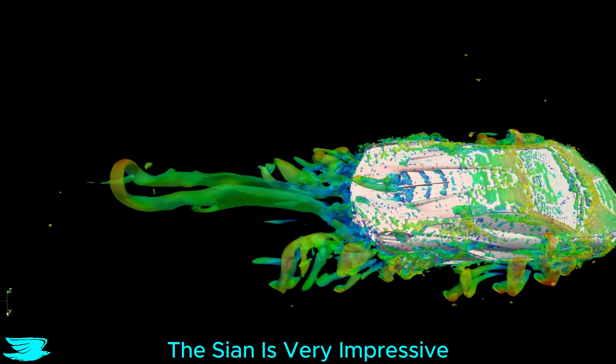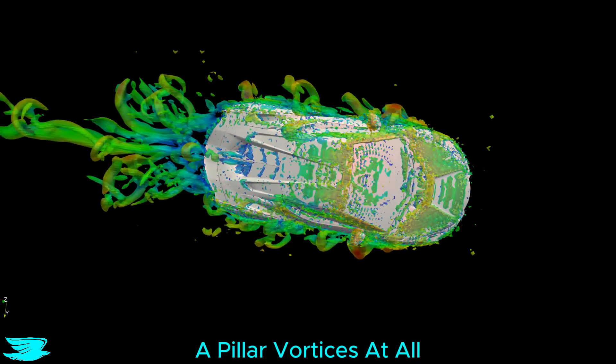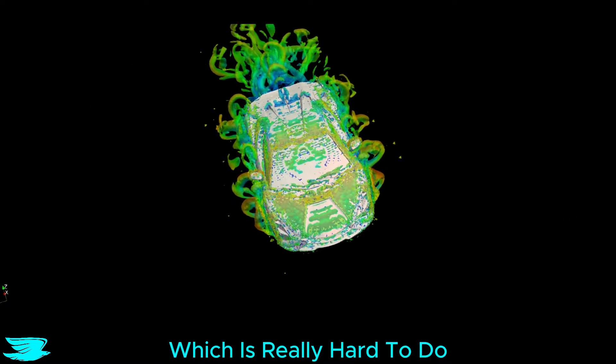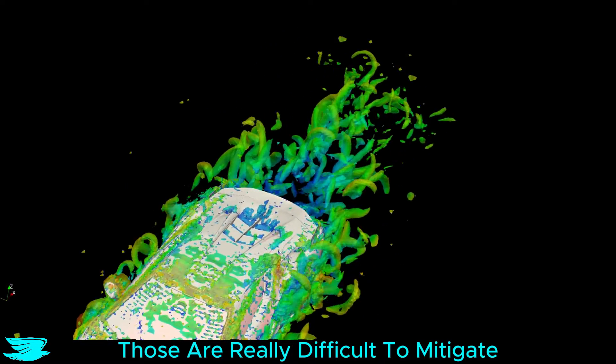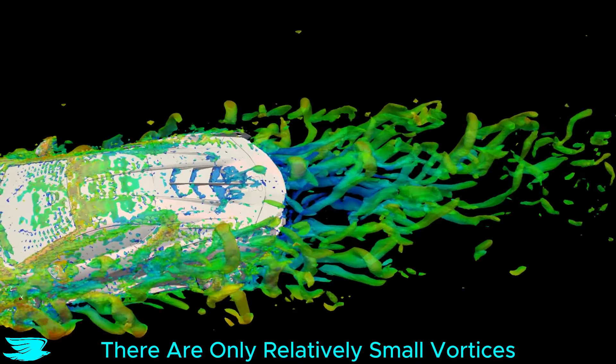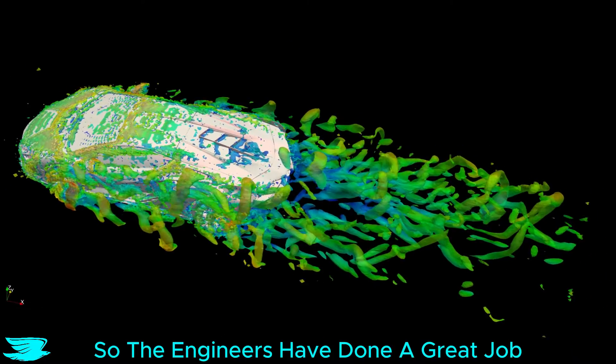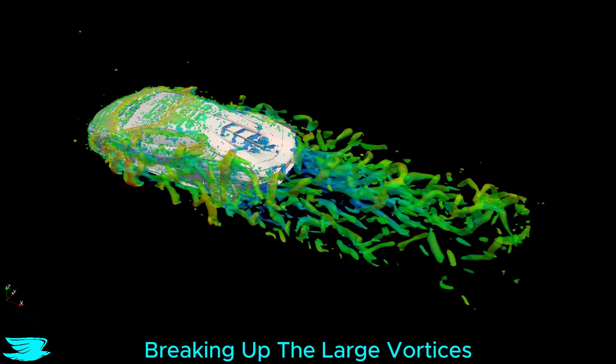Looking at the vortices, the Sian is very impressive. There are literally no A-pillar vortices at all, which is really hard to do. There are vortices from the wheels, which happens. Those are really difficult to mitigate. But in the wake, there are only relatively small vortices, so the engineers have done a great job breaking up the large vortices into small ones.